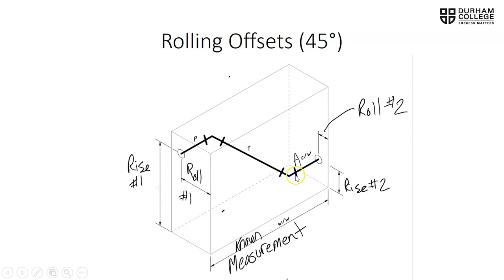On this particular question, if we were solving for the travel and for pipe P, we would need to know what pipe A is — the center of the 45 over to the wall dimension A. Also, the overall inside wall-to-wall dimension of the box should be a known measurement in order to help us find the remaining pipe P.